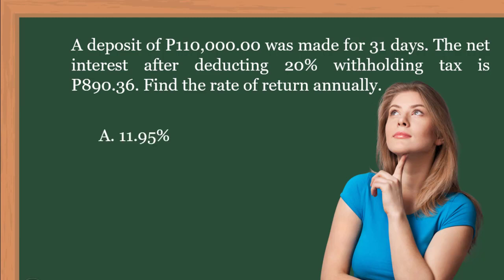Letter A: 11.95%. Letter B: 12.75%. Letter C: 11.75%. And Letter D: 12.25%.